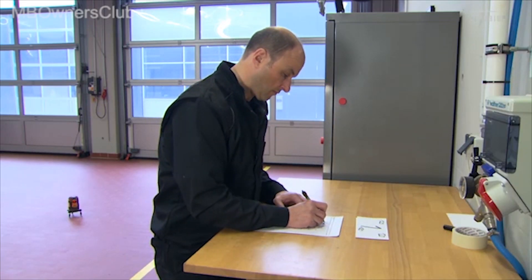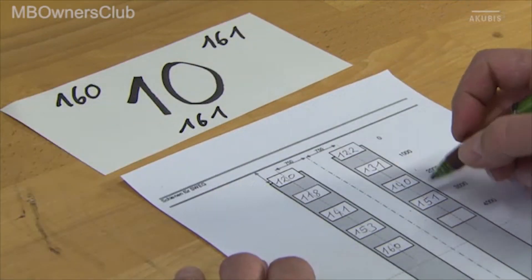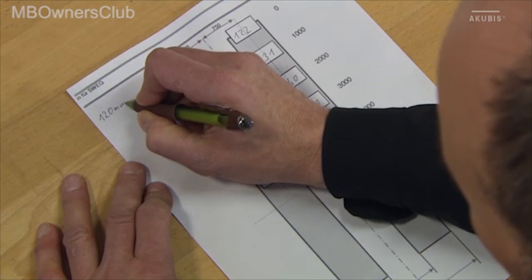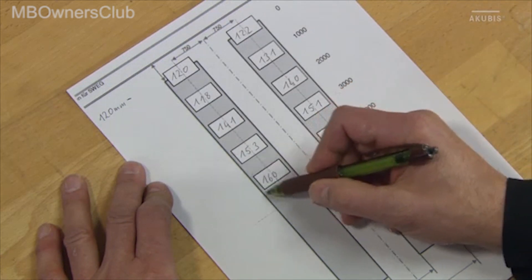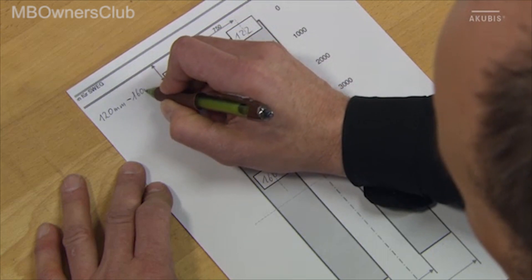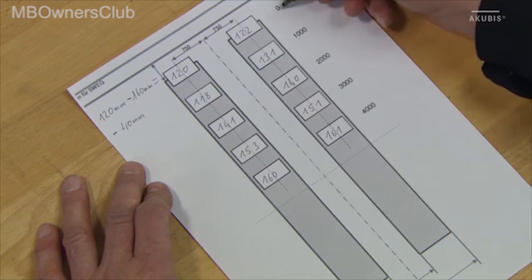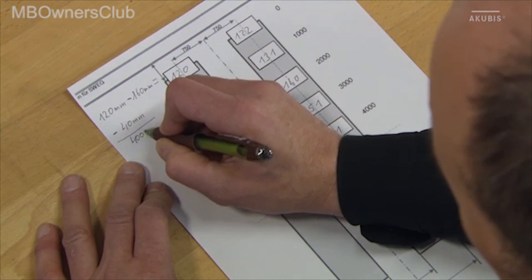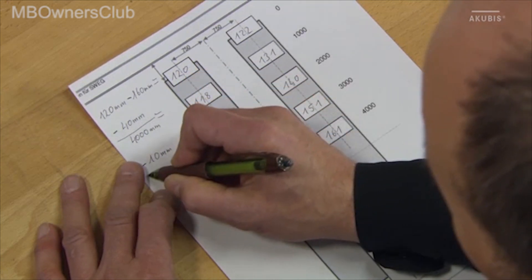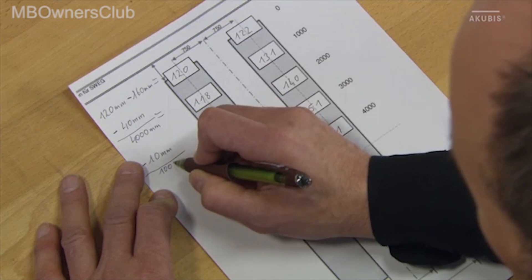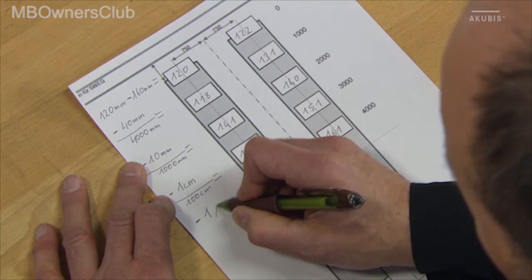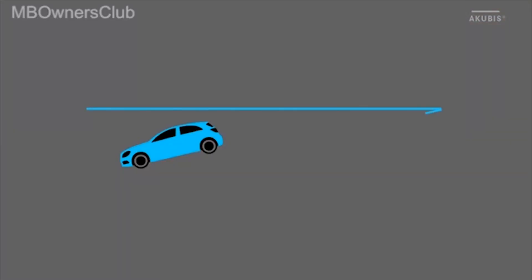Calculate the mean value of each measurement point and transfer the value to the measurement sheet. Then compare the values of the measuring points with each other and compare them with the inclination specifications for your country. In our case, the inclination is 40 mm over 4 meters. This is equivalent to 10 mm per meter, that is 1 cm per 100 cm. This results in a vehicle park area inclination of minus 1%. This value for the left park area is within German specifications.